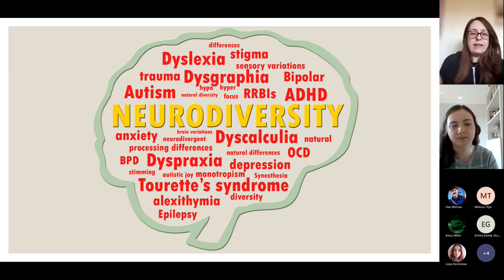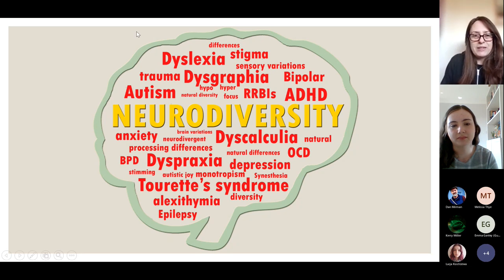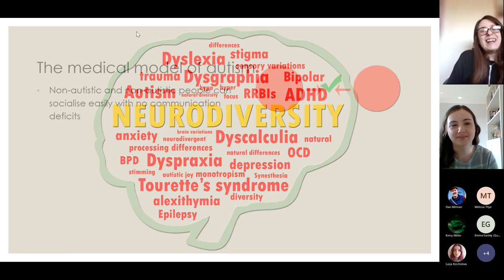A single person can't be neurodiverse — a neurodivergent person or a neurotypical person, ND or NT, are the individual terms. Here's a word cloud I made to cover some of the things included in the neurodiversity bubble. Whilst I'm talking about autism today, we can't forget that's not the only kind of neurodiversity.